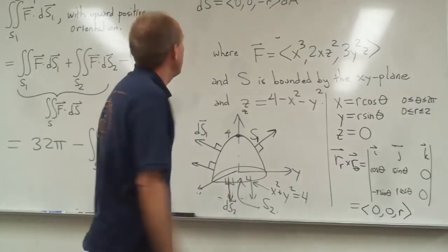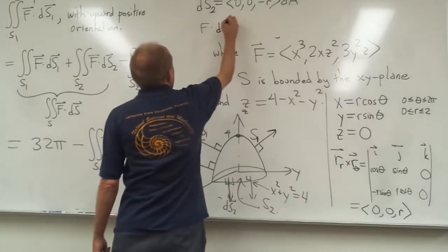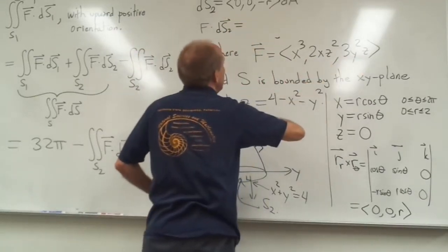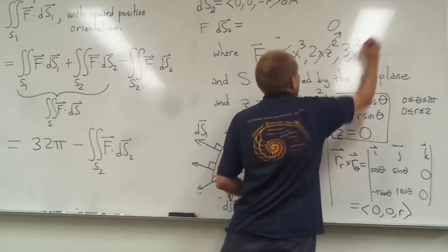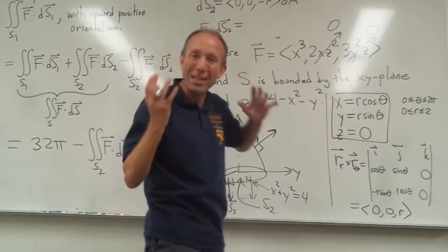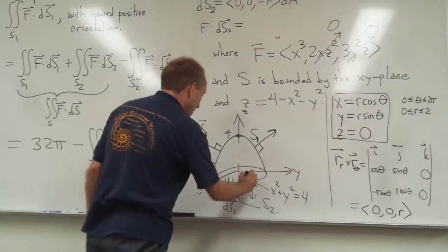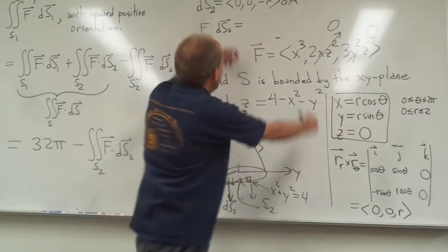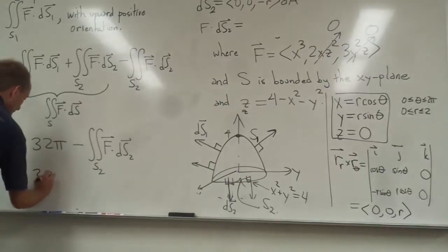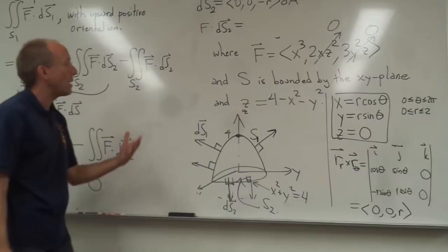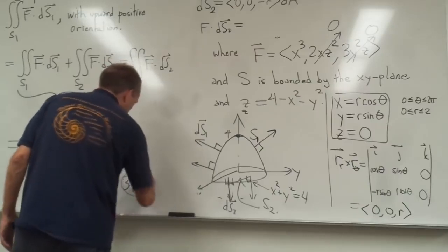Here's the amazing thing: when we compute F·dS₂, remember that z = 0 on the disk. Looking at the vector field F, if we're in the xy-plane, the 2xz² and 3y²z components both vanish, leaving only the i-component x³. But our dS₂ vector only has a k-component. Since these vectors are perpendicular, when you dot them together you get zero. This second integral is just zero — we don't even have to do the integration. So the final answer for the flux through S1 is 32π − 0 = 32π.